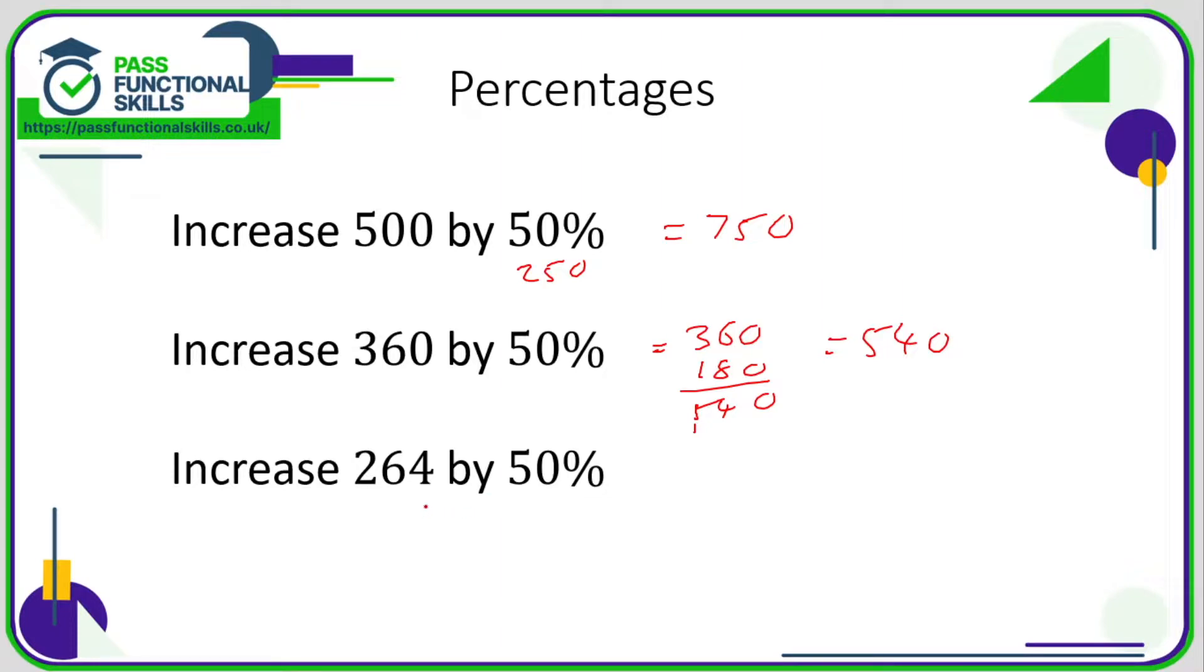If we want to increase 264 by 50%, first of all we need to work out 50% of 264. What is half of 264? How many 2's go into 264? That's 1, 3, 2. So 50% of 264 is 132. So now we are just increasing 264 by 132. Add the two together, we get 396.